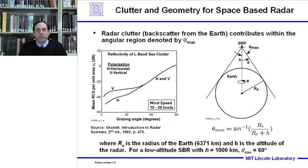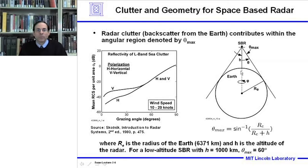In this talk we'll be considering the clutter and geometry for a space-based radar antenna, but it could also be applied to an airborne radar moving over the ground or space-based radar moving over the earth. On the left we're showing typical reflectivity of L-band sea clutter, which as the grazing angle increases the mean radar cross-section per unit area also increases. At 90 degrees, looking straight down at the ground, we would tend to have maximum clutter, and looking toward the horizon the grazing angle gets smaller and we would expect a smaller amount of clutter.